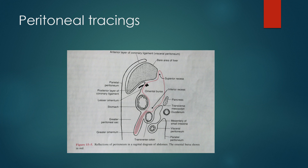Now we come to the peritoneal tracings. We can start from the anterior abdominal wall. Once it has covered the liver and its ligaments, then from the porta hepatis it is going towards the stomach and forming the lesser omentum, covering the stomach and then forming the greater omentum at the greater curvature. The space behind the lesser omentum and behind the stomach is the omental bursa, also known as the lesser sac.